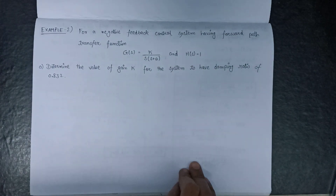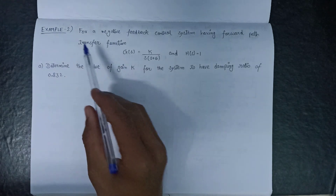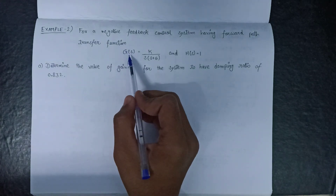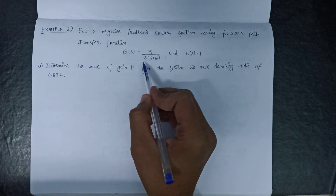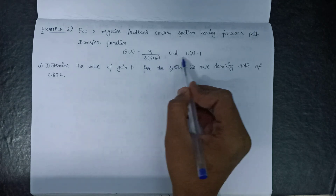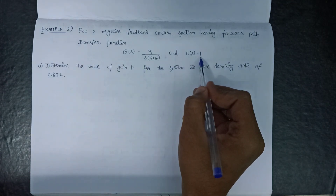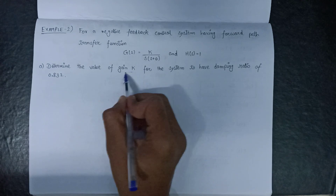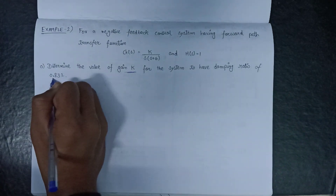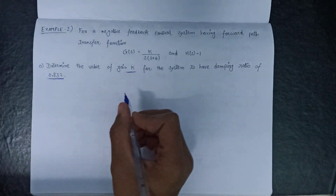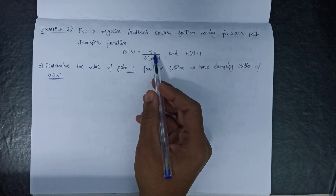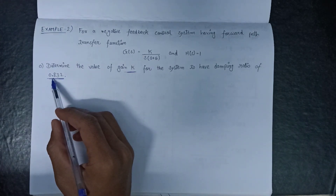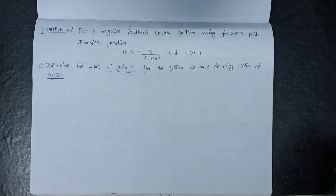Welcome all. In this lecture we are going to discuss example number 2. For a negative feedback control system having forward path transfer function G(s) = k / [s(s+6)] and unity feedback H(s) = 1, we need to determine the value of k for the system to have a damping ratio equal to 0.832.